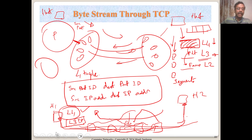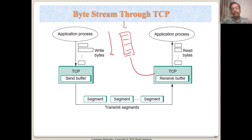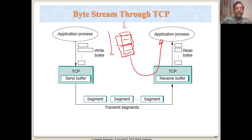TCP provides a reliable, connection-oriented interface between two endpoints using the unreliable best-effort IP layer below it. The application process sends a stream of bytes, and the same stream is delivered at the other end without any error. Checksums at different levels ensure that not even a single bit of information is corrupted from sender to receiver.